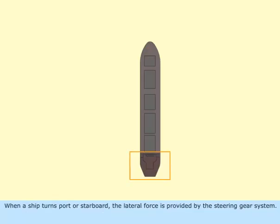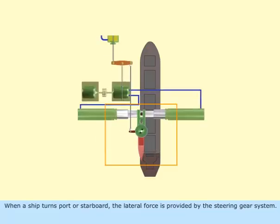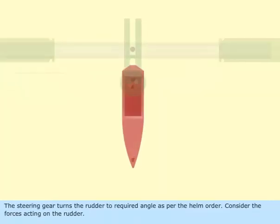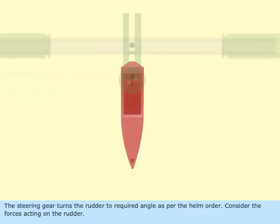When a ship turns port or starboard, the lateral force is provided by the steering gear system. The steering gear turns the rudder to the required angle as per the helm order. Consider the forces acting on the rudder.